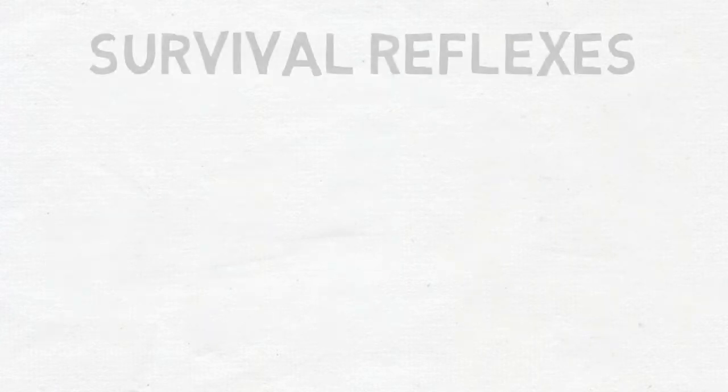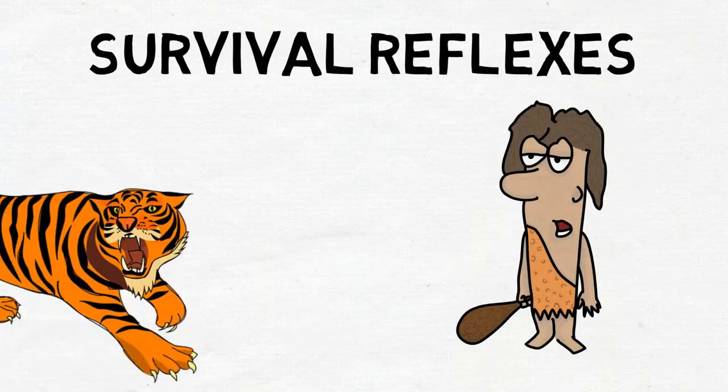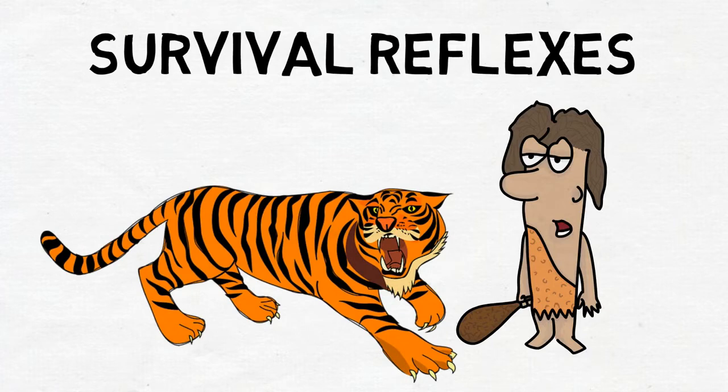And they're survival reflexes, which means freezing enabled our ancestors to survive dangerous experiences, especially with large predators that wanted to eat them. In a nutshell, freezing reflexes make us stop everything, receive information about the danger or attack, and wait for our brains to queue up potential responses.